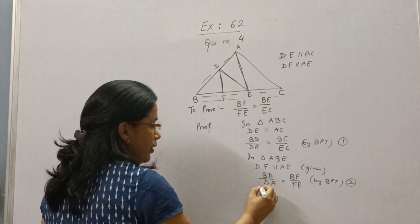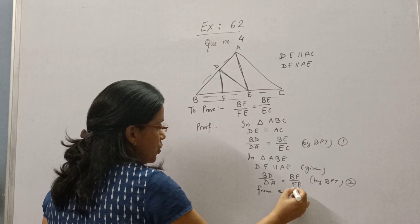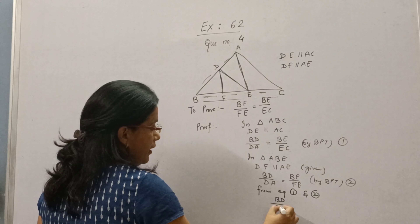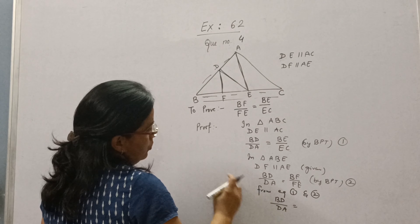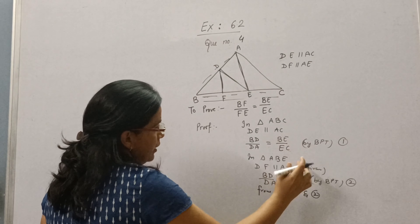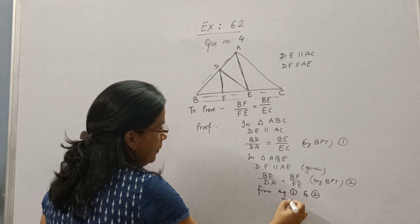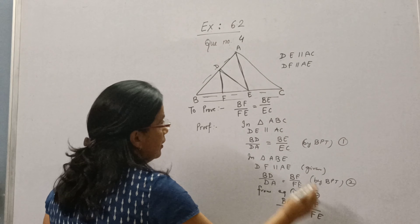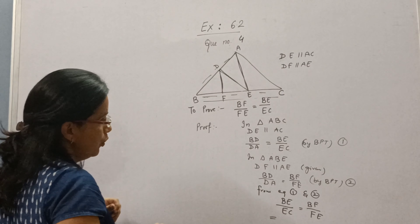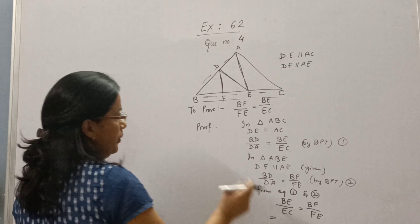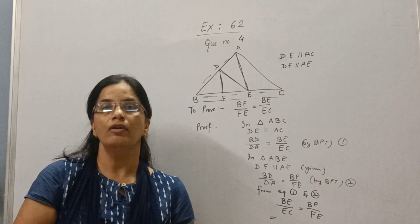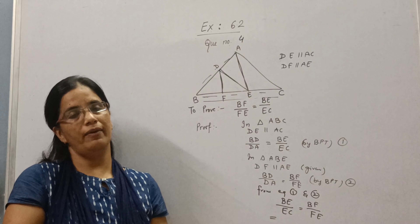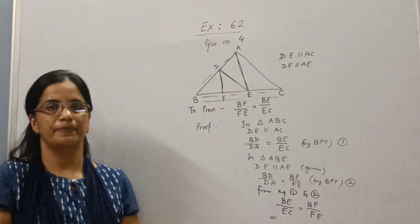Now, we have been given that DF is parallel to AE. So we will take triangle ABE. In triangle ABE, DF is parallel to AE — this is given. So again we will apply BPT. By BPT, BD upon DA is equal to BF upon FE. This is equation number 2.